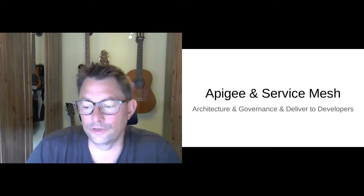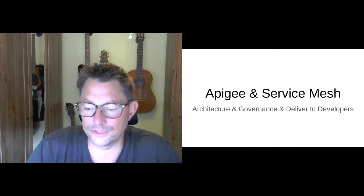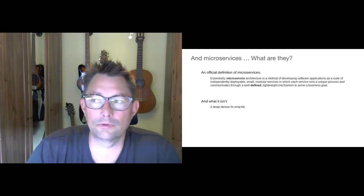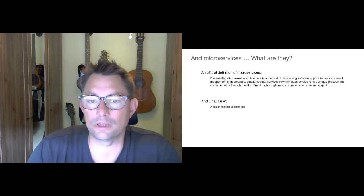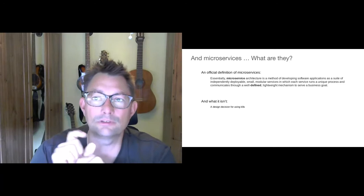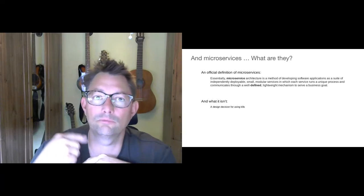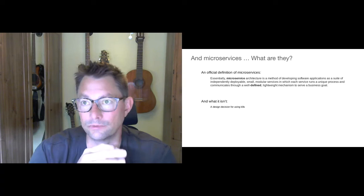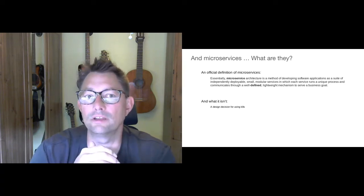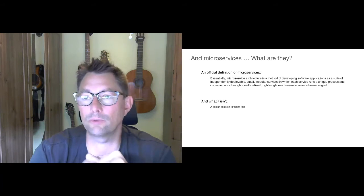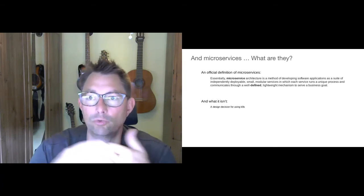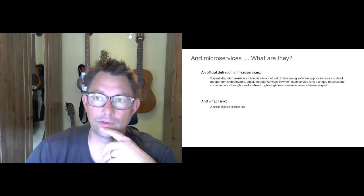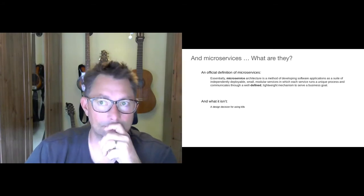I want to start with a definition of microservices, because I find pretty often when I talk to customers, they think microservices and containerization are somehow the same thing — and of course, they're not. To me, a microservice is a small service that's infinitely redeployable. You can idempotently deploy it over and over and get the same result. It controls its own data, and by exposing that contract, you want some way to make it generally consumable — usually that's an API. But strictly speaking, it's not simply a decision to start using Kubernetes or any other orchestrated containerized platform.